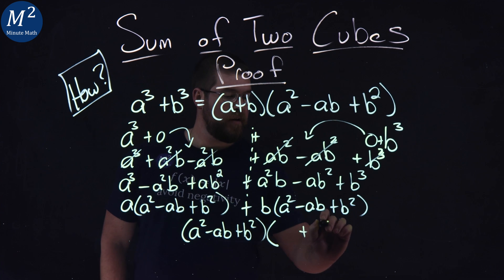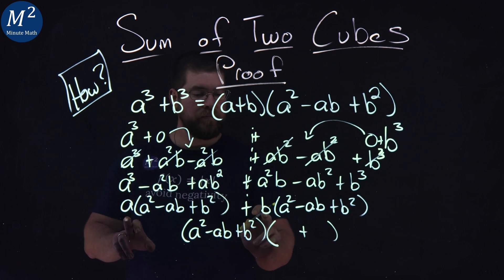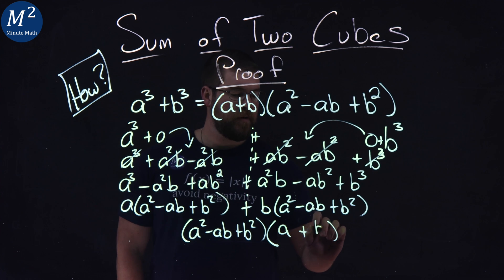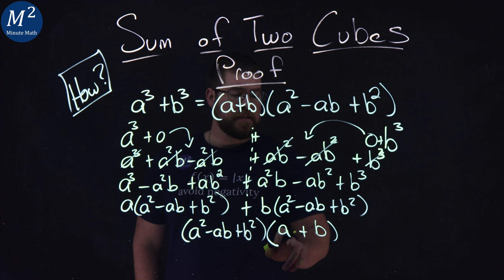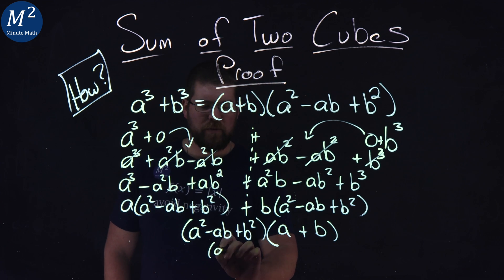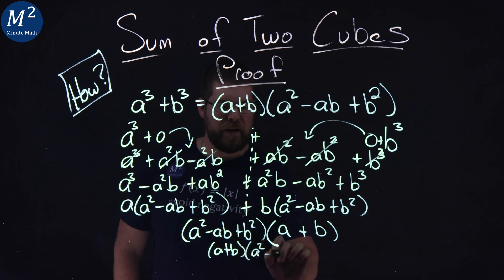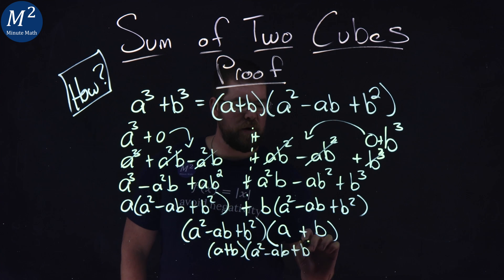So I'm pulling that out times what's left over here on the plus side, and that is a plus b. So we have a squared minus ab plus b squared times a plus b. And we can flip that around, put a plus b first, and we have a squared minus ab plus b squared.